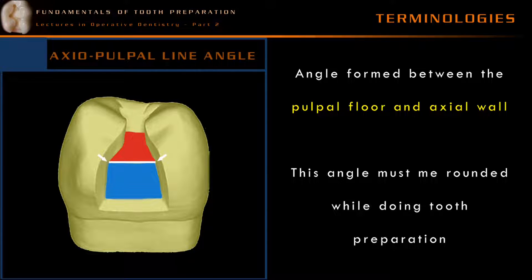Although there are a number of line angles in a tooth preparation, the axial pulpal line angle carries high clinical significance. The axial pulpal line angle is the angle formed between the pulpal floor and the axial wall. This angle must be rounded during tooth preparation with the help of a gingival marginal trimmer. If this rounding is not performed properly, it could lead to fracture of the restoration.